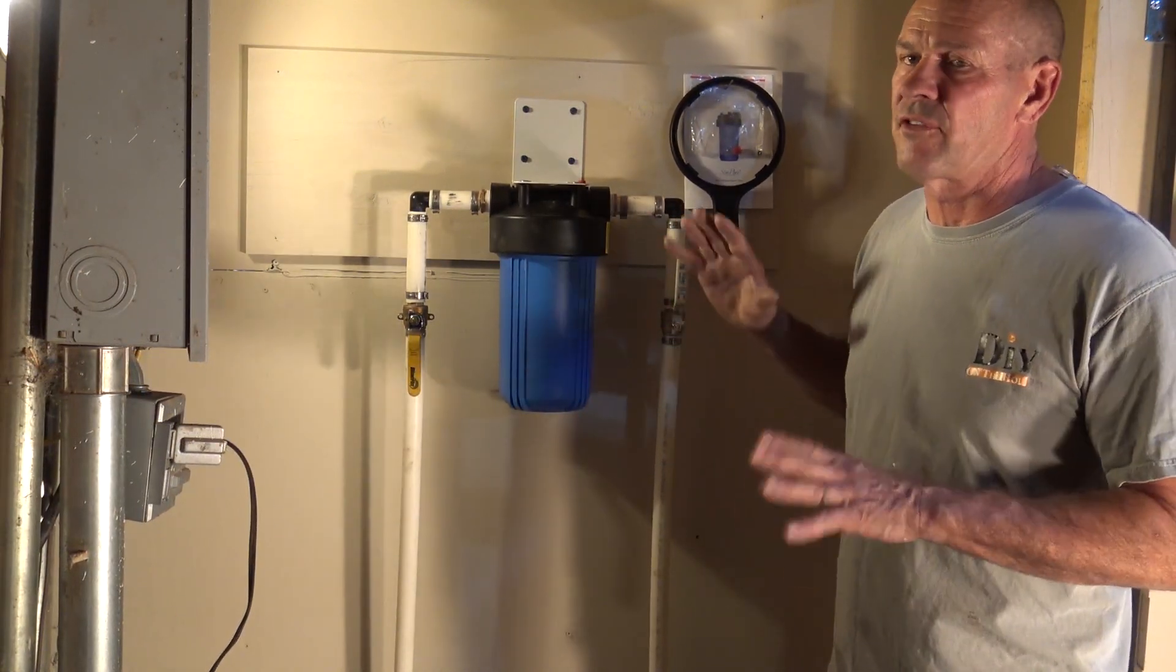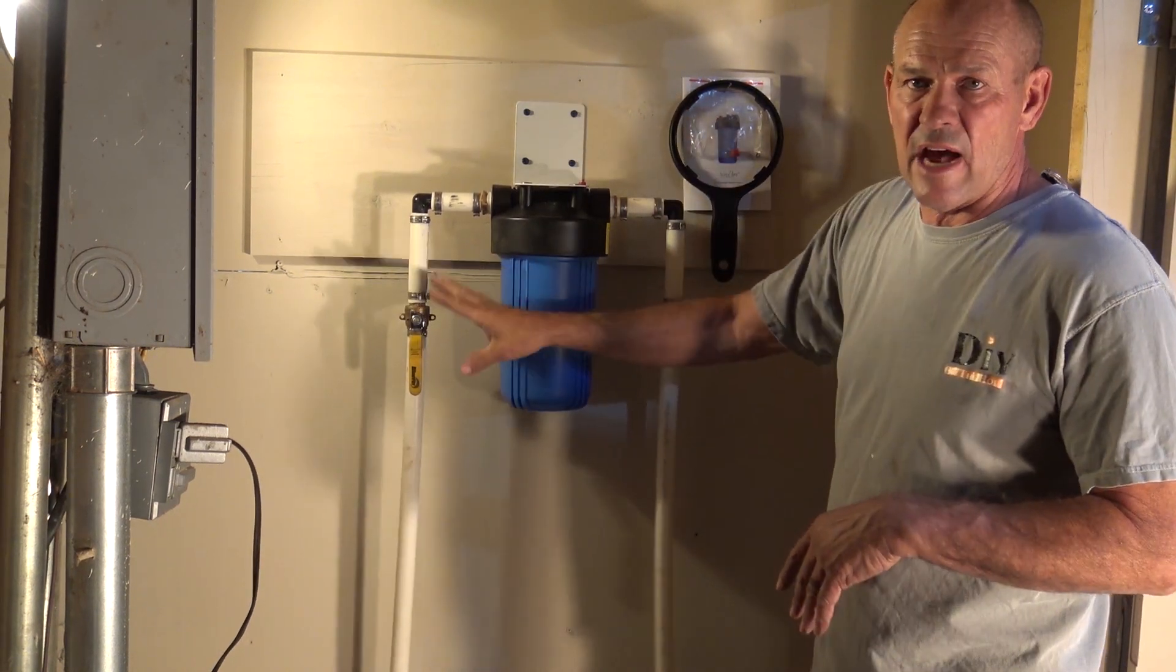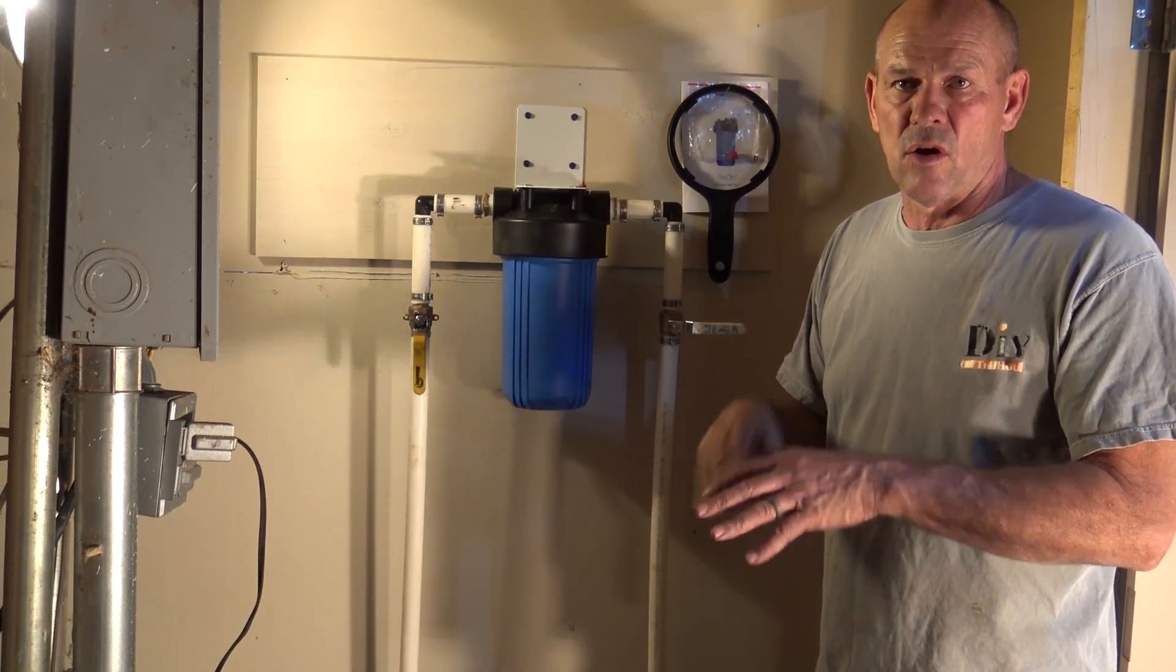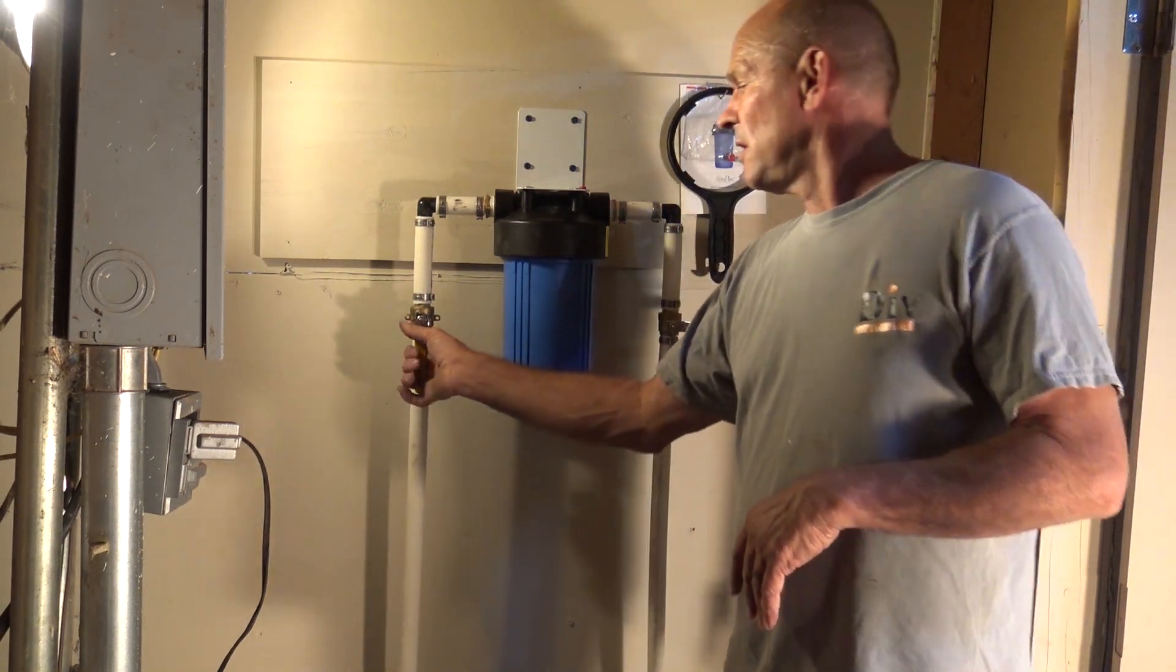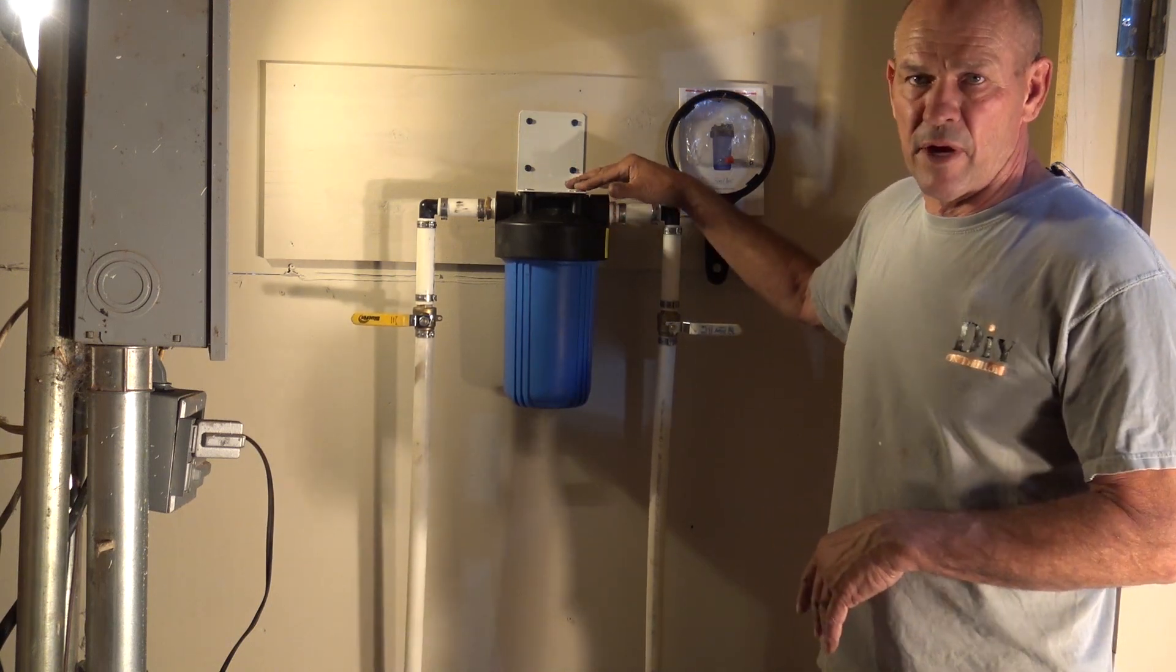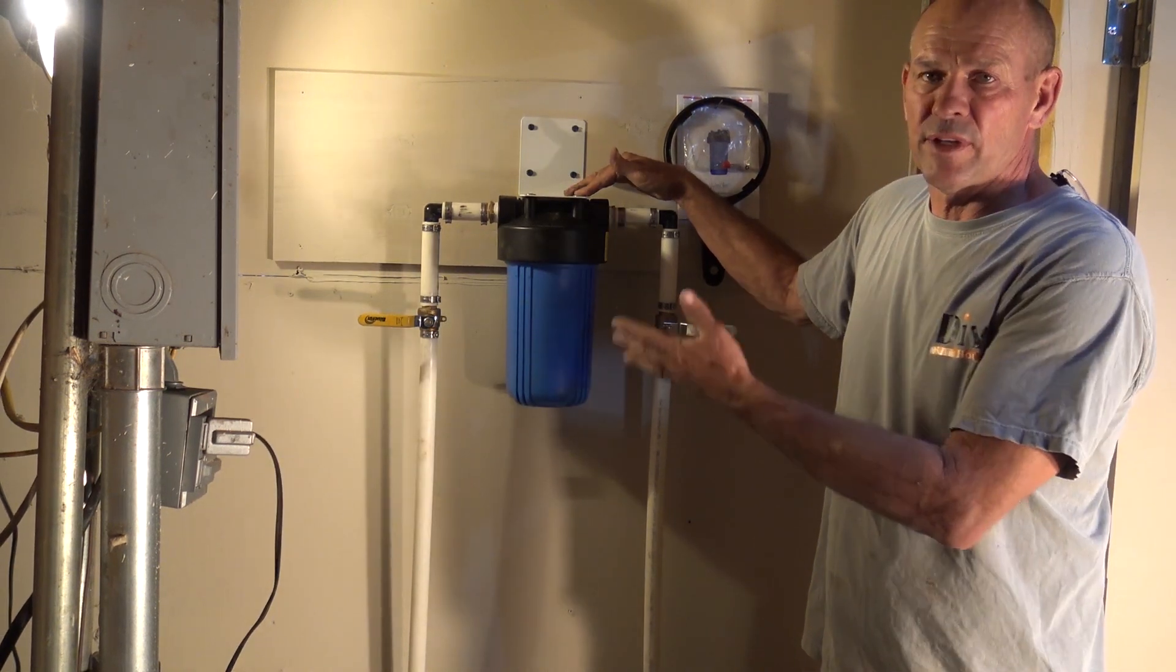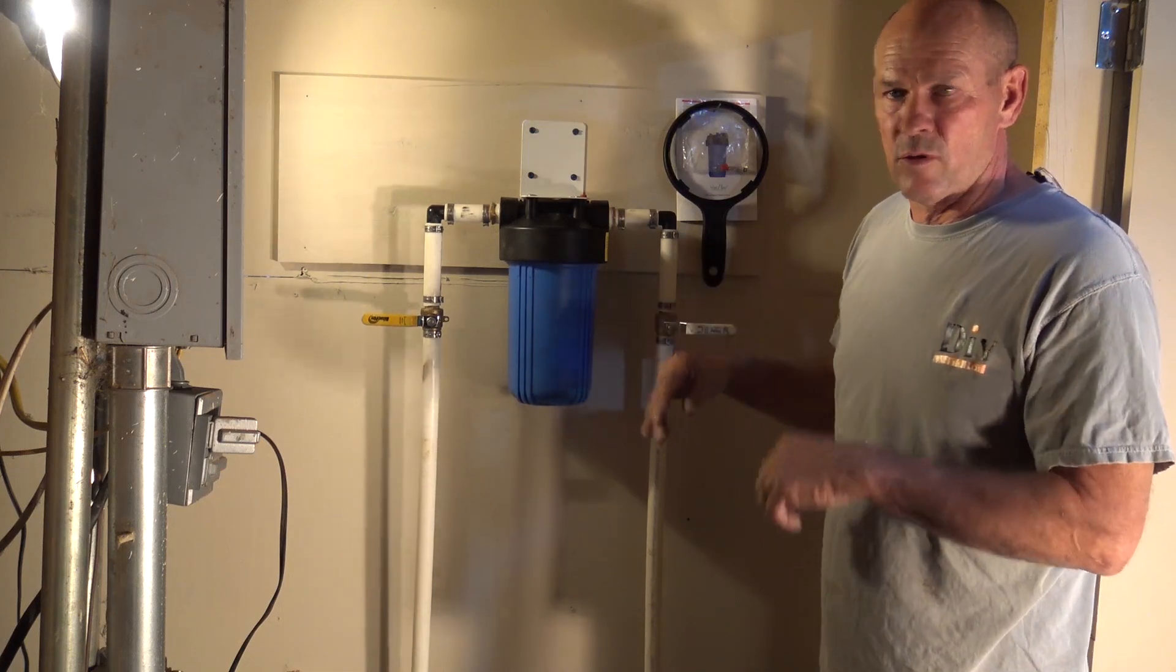As far as changing the filter out, very simple. Turn off the incoming water and if you do not have an outgoing valve like we do here, you can simply turn on a tap, let the water pressure go down to zero, and then you can proceed. If you have an incoming outgoing valve, just shut off the outgoing valve. There's a red purge button at the top and you're going to need to do this even if you don't have that outgoing valve. Push that button and relieve any pressure that's in the sump itself and then once that's gone we can go ahead and remove it.